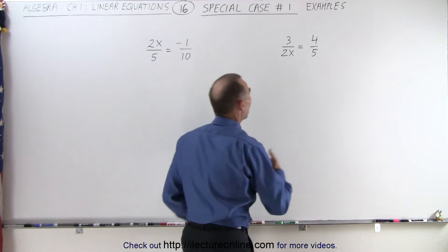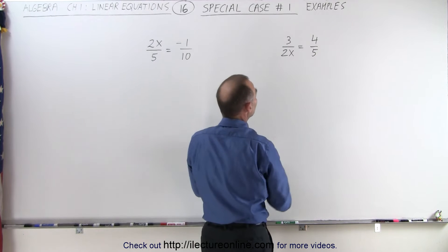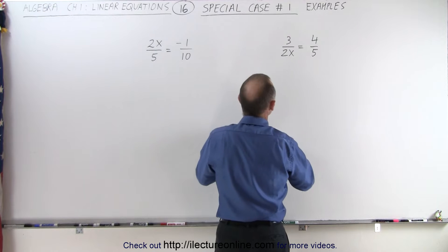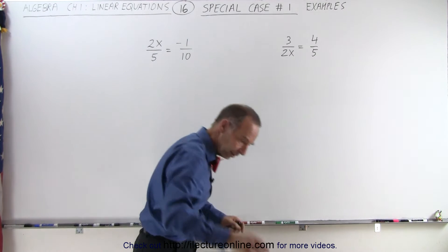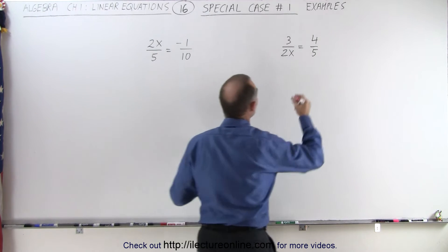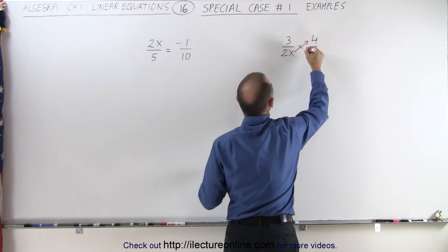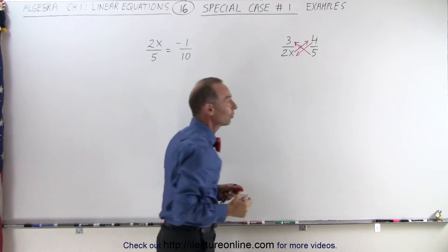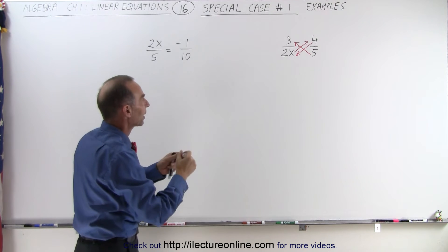First of all, I want the x to be in the numerator. So what I'm going to do is move the 2x over here, move the 4 this way, and move the 5 this way. So I'm going to move things across the diagonal.